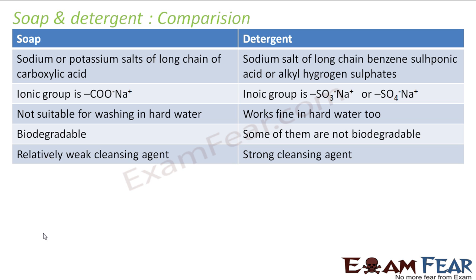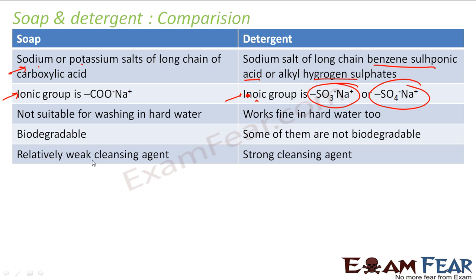Now we have learned soap and detergent — let's compare them. Soap is nothing but the sodium or potassium salt of a long chain carboxylic acid. Detergent is the sodium salt of a long chain benzene sulfonic acid, also known as alkyl hydrogen sulfates. The ionic group in soap is COO⁻Na⁺, while in detergent, note the spelling, the ionic group is SO₃⁻Na⁺ or SO₄⁻Na⁺.